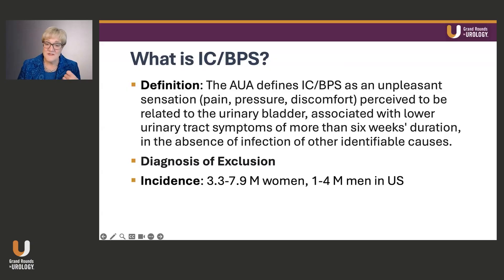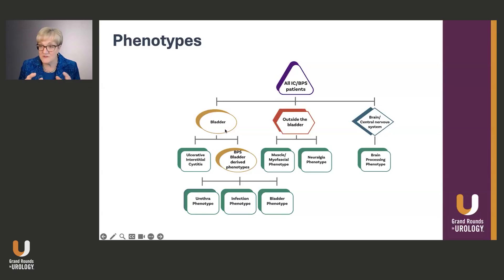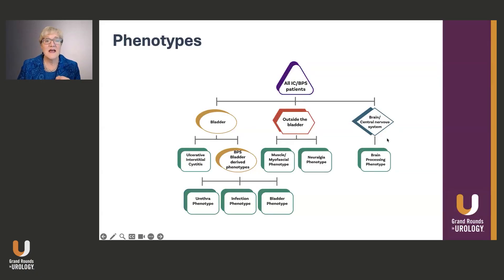To help solve this problem, what we can do is phenotype. This allows us to take that large group of patients and break it down into three different potential sources of symptoms: the bladder and the urethra, symptoms that may be coming from outside the bladder, and then symptoms that are coming from the brain and central nervous system.